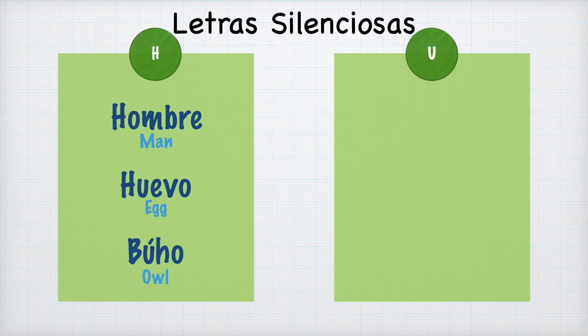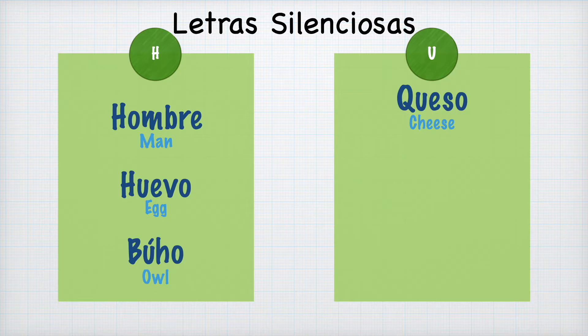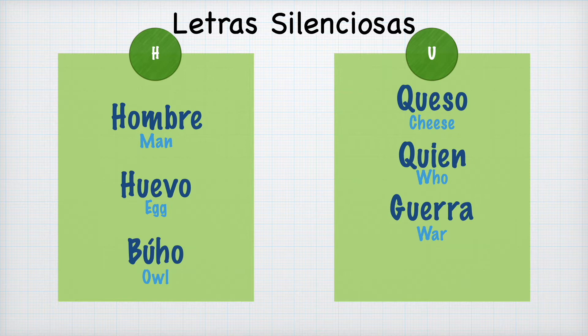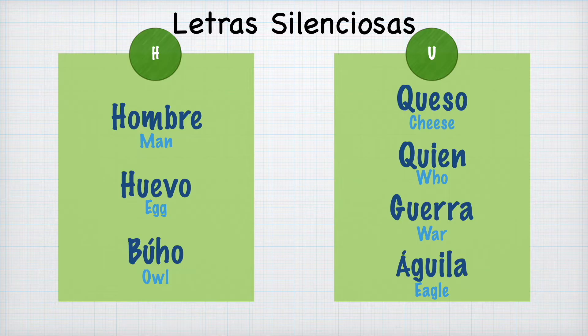There are also situations where the U is silent. Letras silenciosas means silent letters. When there's the QUE combination, as in queso, the U doesn't sound. We also have the QUI combination as in quién, the GUE combination as in guerra, and the GUI combination as in águila. In all these combinations, the U doesn't make a sound. Other than these exceptions, everything else is pronounced.